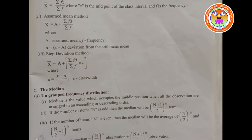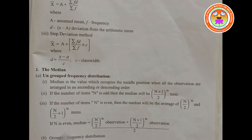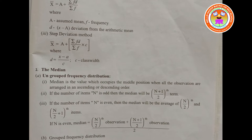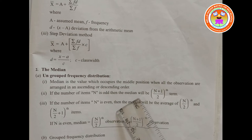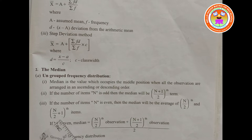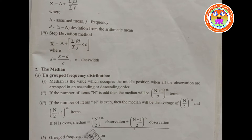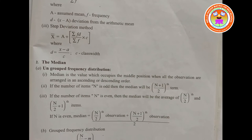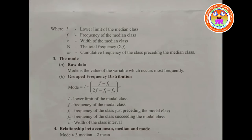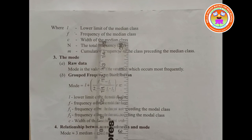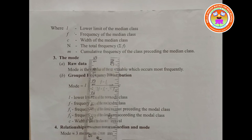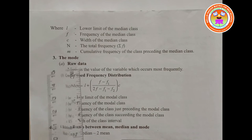Then you will be learning the median. For ungrouped frequency distribution: median is the value which occupies the middle position when all observations are arranged in ascending or descending order. If the number of items n is odd, then median = the (n+1)/2 th term. If n is even, then median = average of the (n/2)th and (n/2 + 1)th items. For grouped frequency distribution: median = L + [(N/2 − m) / f] × c, where L is the lower limit of the median class, f is the frequency of the median class, c is the width of the median class, N is the total frequency (Σf), and m is the cumulative frequency of the class preceding the median class.